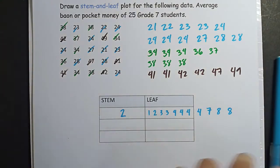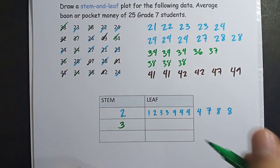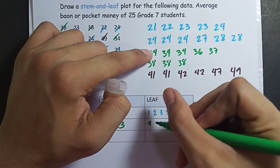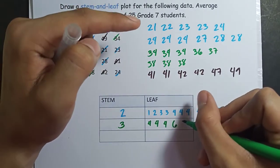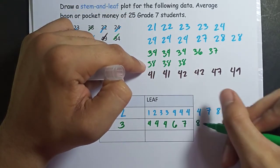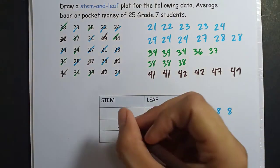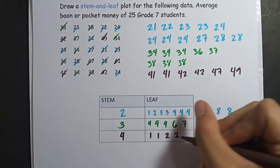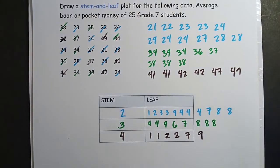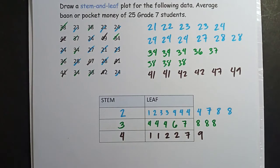Next for the 3, the 30s. The stem is 3. So 34, 34, 34, 34, 6. I'll just list all the ones. And last is the 41 to 50. 4, 1, 1, 2, 2, 7, 9. And as you can see, it's much better organized now. We can see our data more clearly. That's the purpose of stem and leaf.